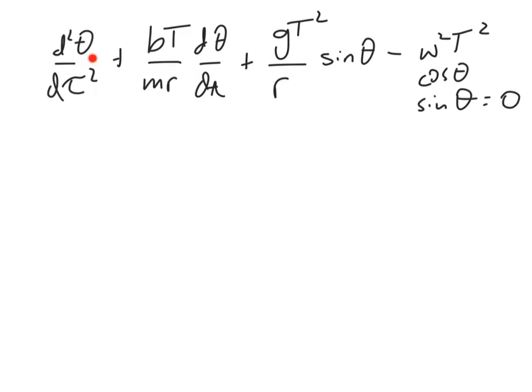That means that we have a bunch of nondimensional groups. bT/mr is a nondimensional group, gT²/r is a nondimensional group, and omega squared t squared is a nondimensional group. I'm going to write these down. So bT/mr has no dimension, gT²/r, and (ωT)². All of these are dimensionless.